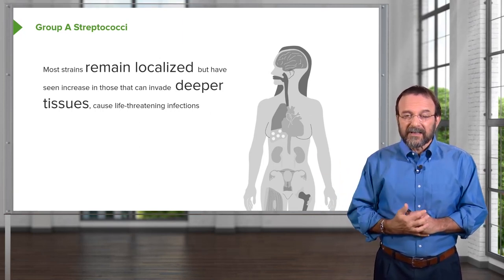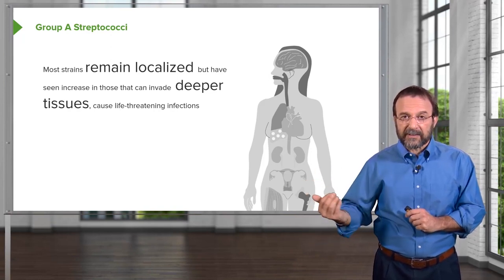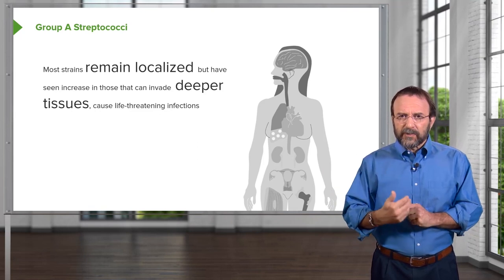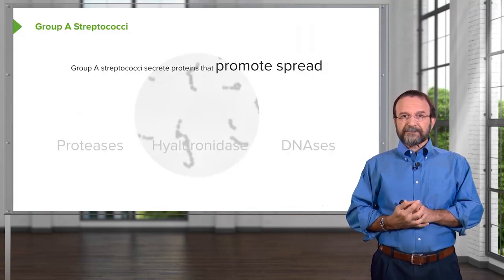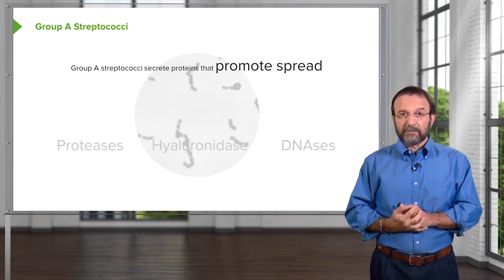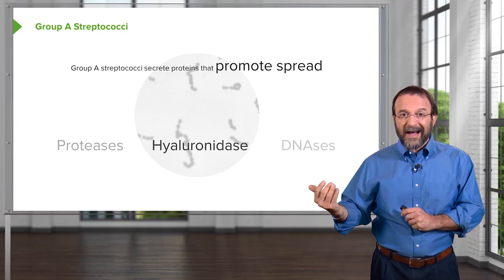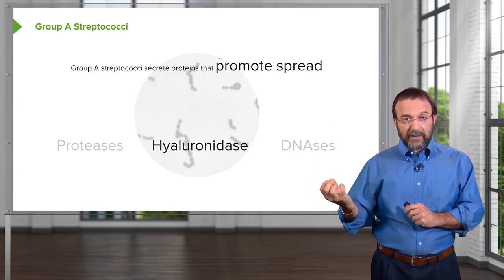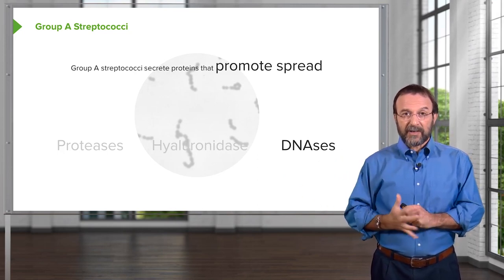Most streptococci remain localized in the throat or on the skin, but over the last 10 to 20 years we've seen an increase in strains that can invade deeper tissues — serious, life-threatening infections. Group A streptococci produce exotoxins that promote spread, including proteases that digest host proteins which would normally restrict bacterial spread, and hyaluronidases that digest hyaluronic acid in the extracellular matrix, loosening tissues. DNases chop up extracellular DNA, which would otherwise impede bacterial movement.